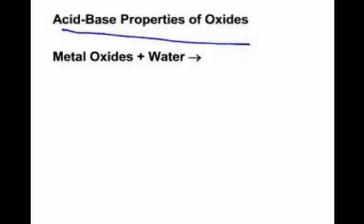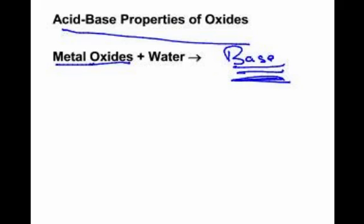We have one last topic: acid-base properties of oxides. We've covered this before, but it's so important. You have to be able to write balanced equations. Metal oxides plus water always make what? Base. Pick a metal oxide, like potassium oxide.